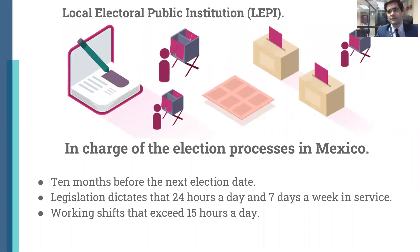Such is the case of local electoral public institutions, which are autonomous institutions that have a presence in each state across the country. They are in charge of the election processes in Mexico. Therefore, they all have similar processes and suffer the same problems. An electoral process starts ten months before the next election date and legal institutes stipulate that 24 hours and seven days a week are business hours, resulting in long working shifts that exceed 15 hours a day.